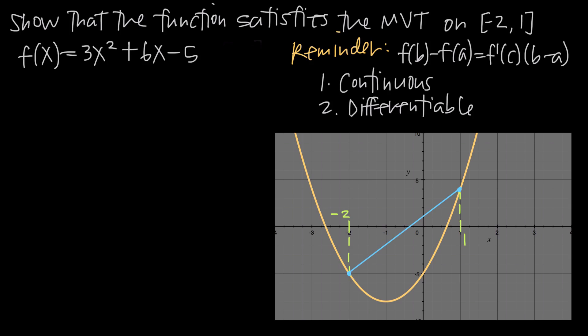We always want to check that our function is both continuous and differentiable. If it isn't either of those, we can't use the mean value theorem. In our case, we have a polynomial function — a simple quadratic. All polynomial functions are both continuous and differentiable. For more complex functions, you'd look for fractions where the denominator could equal 0, which would be a point of discontinuity.